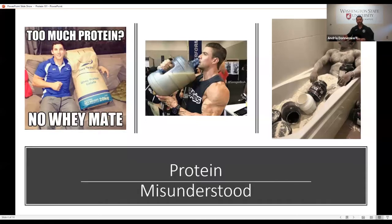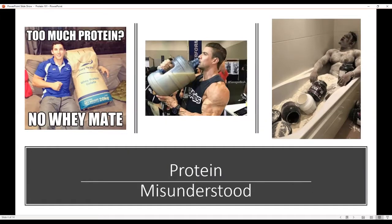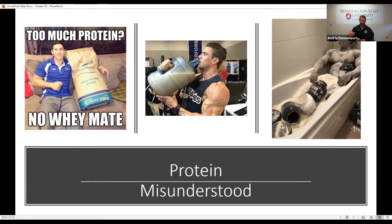Even with our high-end strength and power athletes, the maximum amount of protein they can take in at one time and utilize for anabolic protein synthesis is 50 grams — a very large amount. For most individuals, the range is 20 to 50 grams of protein at one time that will be properly processed and utilized for those anabolic factors and tissue rebuilding.